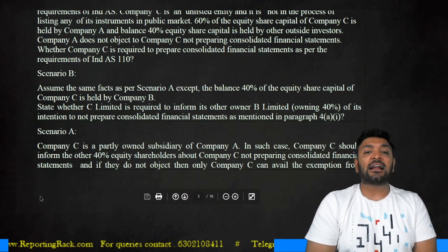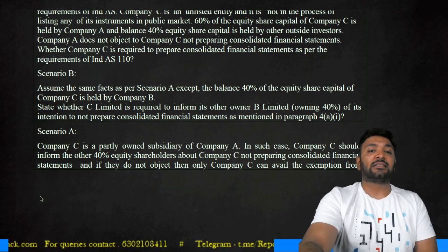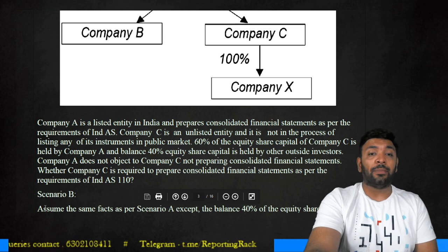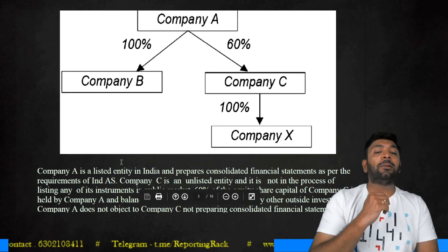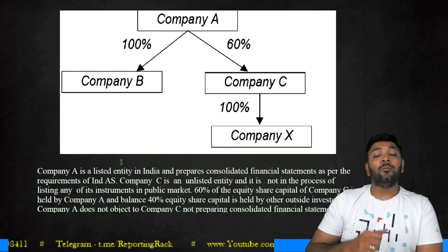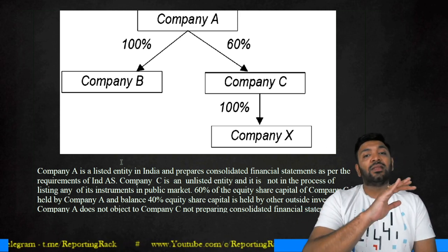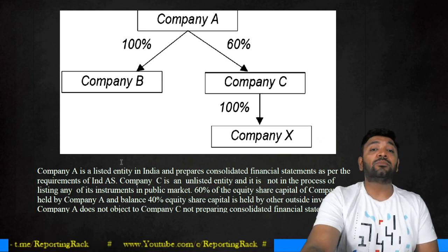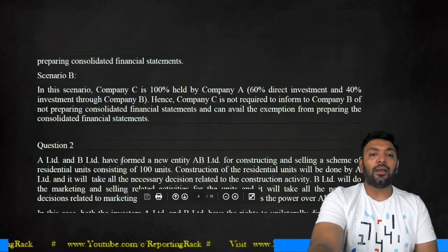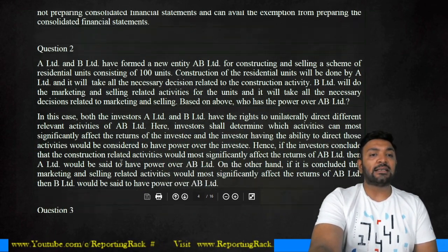Assume in Scenario B: the same facts as Scenario A, except that the balance 40% of equity shares of Company C is held by Company B. The balance 40% shares are held by Company B. Company B is a 100% subsidiary of Company A. Therefore, if Company A agrees that Company C need not prepare consolidated financial statements, that is sufficient for Company C to claim exemption from consolidation. In both Scenario A and Scenario B, Company C is not required to prepare; they can avail the exemption from consolidation.